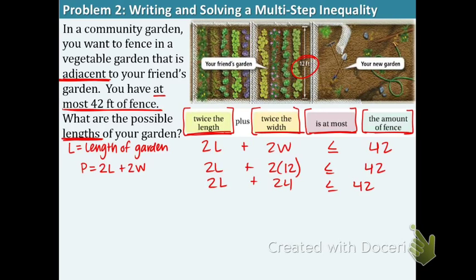We have a two step inequality now, so let's subtract 24 from both sides. And we get 2L is less than or equal to 18. One step more, divide by 2. And L is less than or equal to 9. So that means the length of the garden must be 9 feet or less.